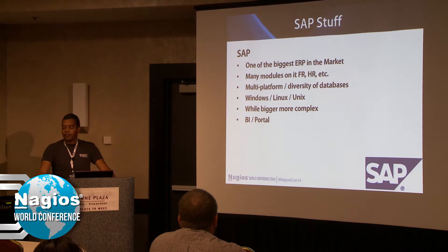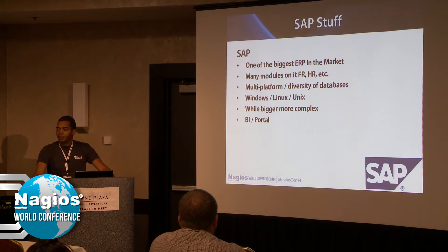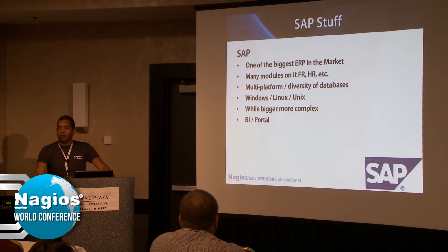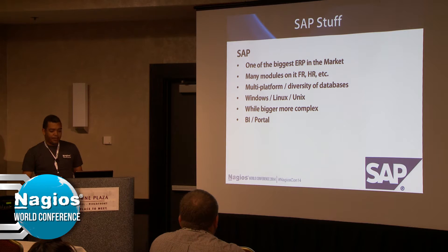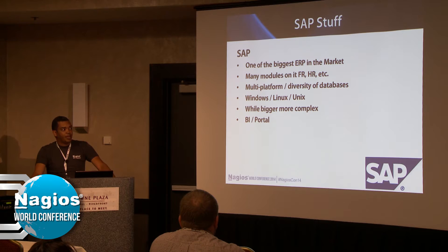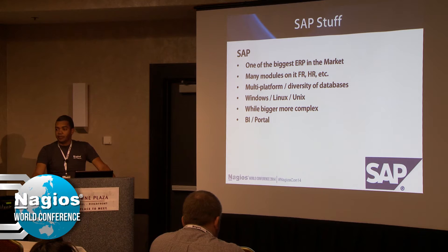SAP is one of the biggest ERPs in the market. Many companies use it around the world. It has many modules like forecasting, replacement, human resources, etc. It's multi-platform — you're going to find an SAP system on Windows, Unix, Linux, etc. The bigger the company, the more complex it becomes, depending on how many modules the company uses. It also has other products like business intelligence and portal.